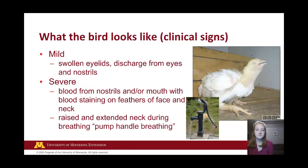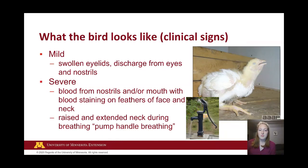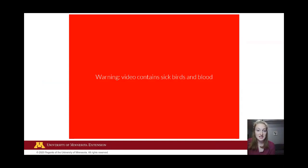Now let's talk about recognizing ILT. Birds affected by ILT can have mild or more severe cases. In mild cases, birds might just have swollen eyelids or discharge from their eyes and nostrils. Severely affected birds may have blood coming from their nostrils and mouth, with blood staining on the feathers near their face. They may raise and extend their neck during breathing — sometimes referred to as pump handle breathing, reminiscent of an old hand pump well. The next slide contains a video of chickens severely affected with ILT, so be warned there is a bit of blood.